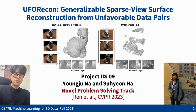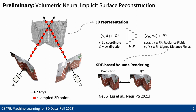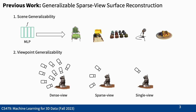Hello, we are Team 9, on the Novel Problem Solving Track. Our project is UFO-Recon: Generalizable Sparse View Surface Reconstruction from Unfavorable Data Pairs. Similar to NeRF, we represent 3D space with two fields: radiance field and signed distance field. For SDF-based volumetric rendering, we utilize NeuS. Our task focuses on generalizable surface reconstruction that can handle general scenes, generating robust surfaces from only two or three sparse view images.